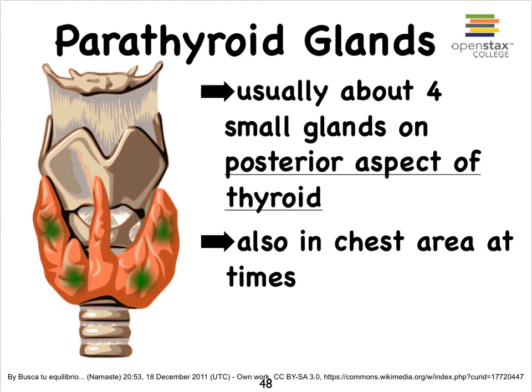What we're seeing here on this image is the thyroid gland with its two lobes, and these green circles represent the parathyroid glands, which are on the posterior aspect of the thyroid gland. It isn't unusual for there to be additional parathyroid glands distributed throughout the chest area.